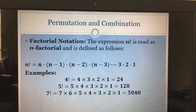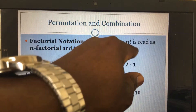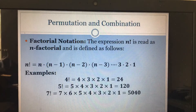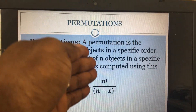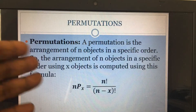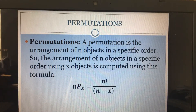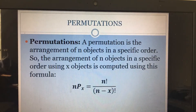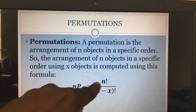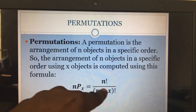Having explained the concept of factorial, I can now go ahead and do examples on permutation. Permutation simply means the arrangement of n objects in a specific order. The formula is: n permutation x equals n factorial divided by n minus x factorial.